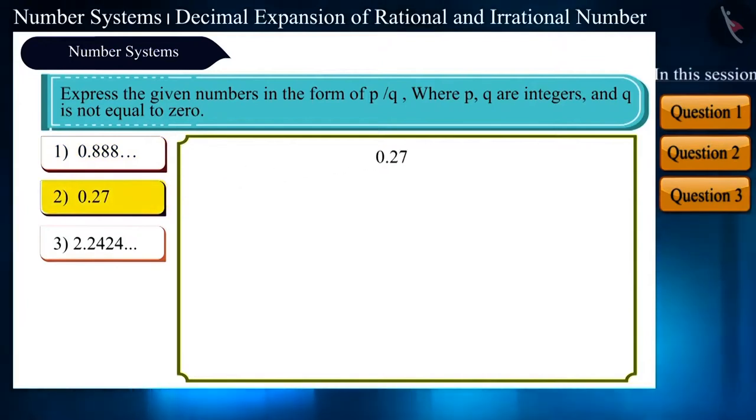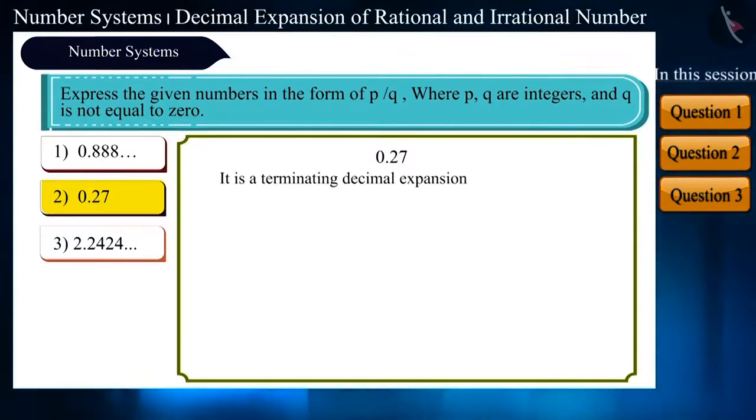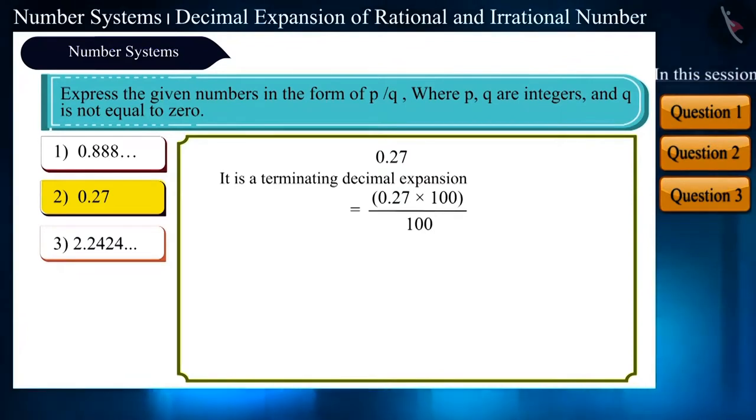Friends, let's take the second number, 0.27. It is very easy to write it in the form of a fraction. This is a terminating decimal expansion. There is no repetition of any number or group of numbers. Here, because there are only two numbers after the decimal, we will multiply by 100 and divide by 100. And now, we will get 27 by 100, which is the fraction form of this number.